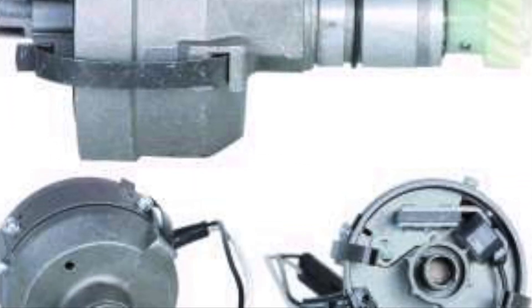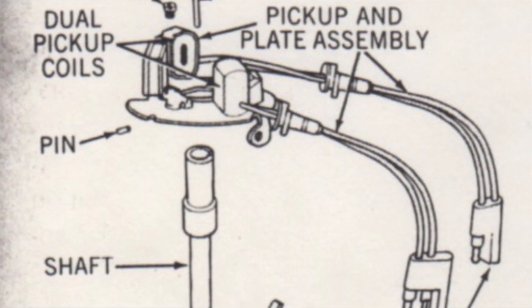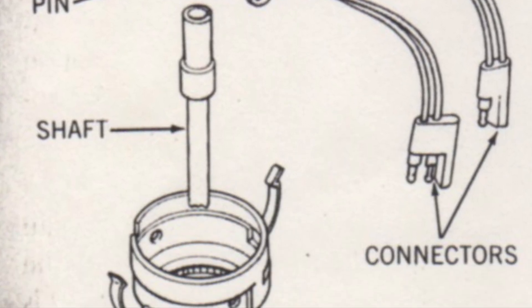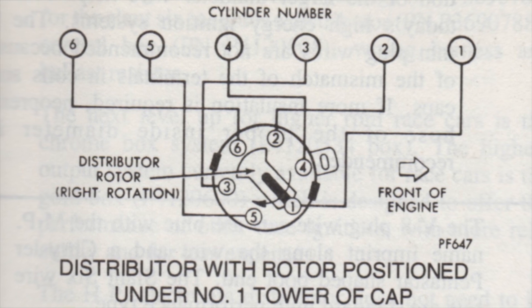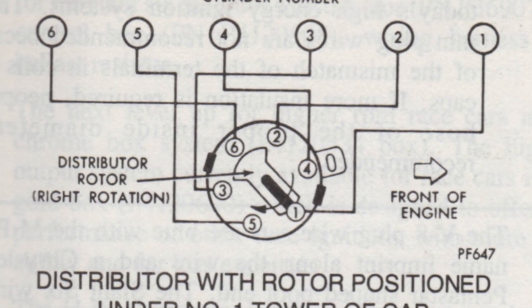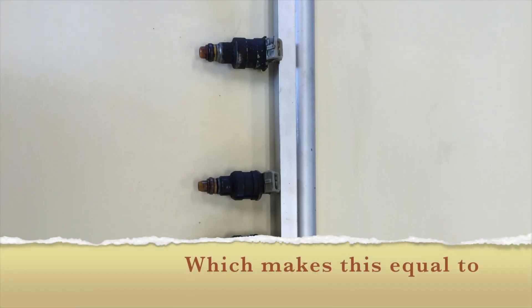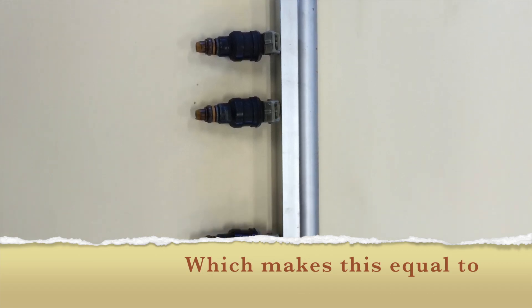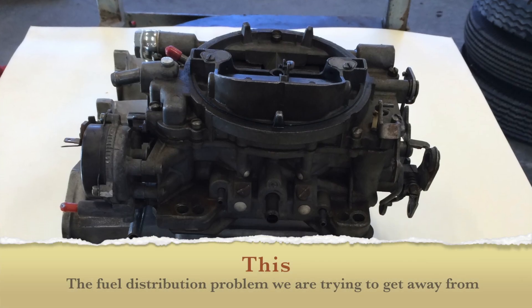You could use an electronic distributor. That will give you essentially three pulses per revolution. So you'd actually have to maintain your stock distributor for the spark system and realize that you would have a batch fuel system. So all injectors would fire every time.